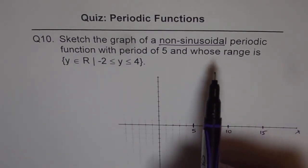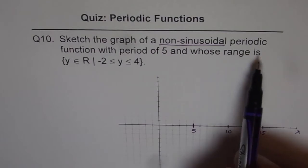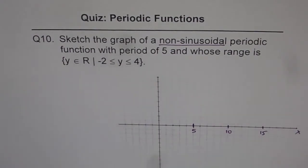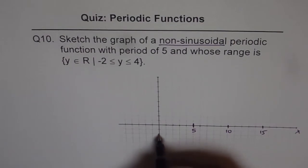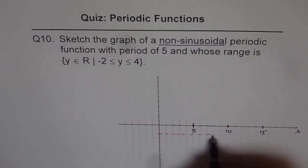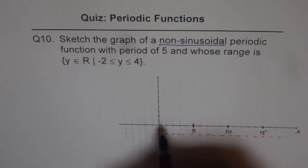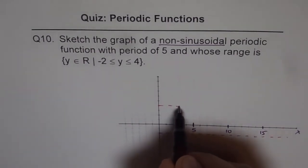Now the next statement is that whose range is between minus 2 and 4. All real numbers means connected line, right? So between minus 2 and 4. Minus 2 is right there. So let's say this is minus 2.